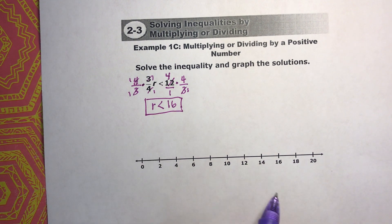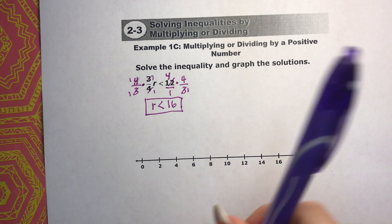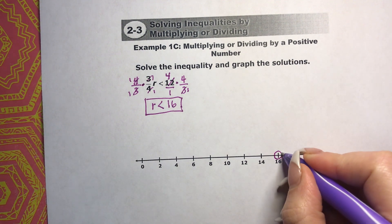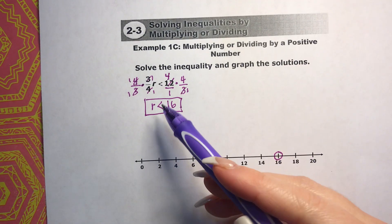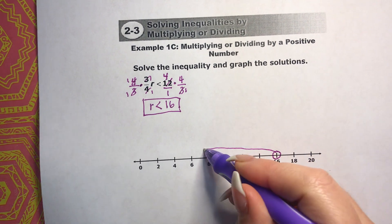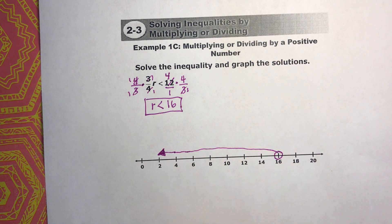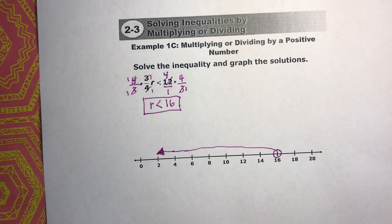Now we just need to graph this. So first thing, is this going to be an open circle or a closed circle? If you said open circle, you are correct. And r is less than 16. So it's going to be everything this way. Alright. Perfect.